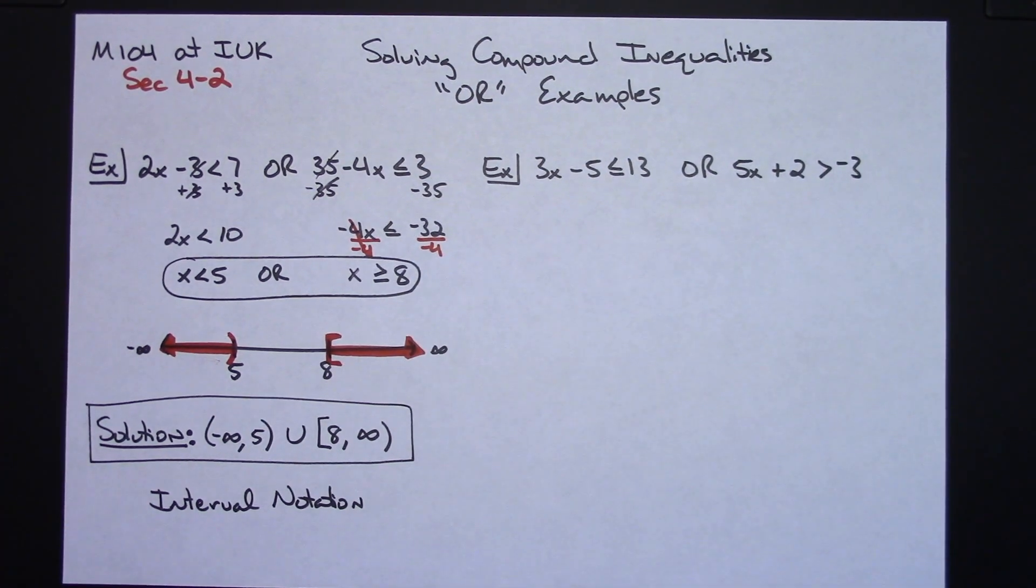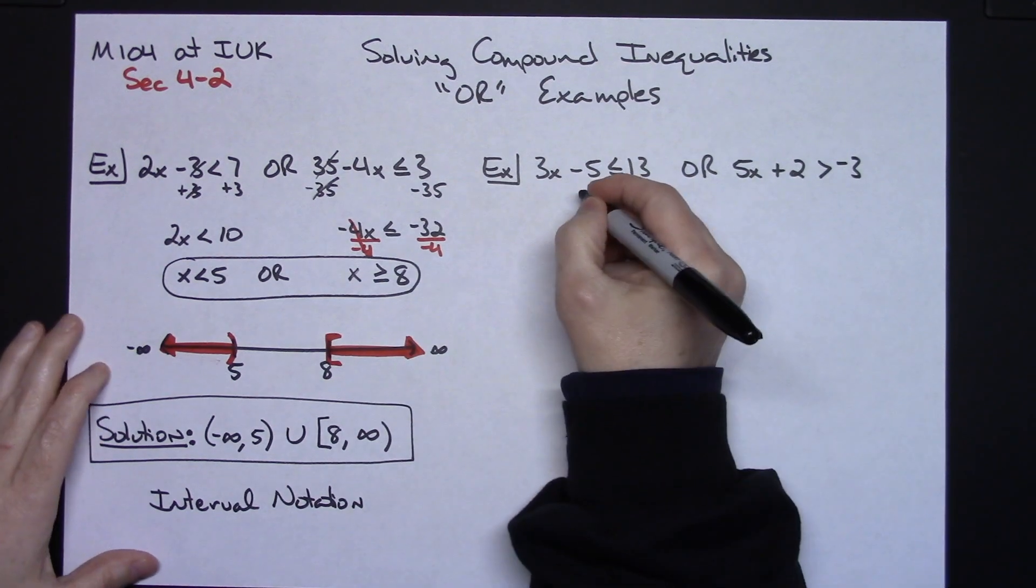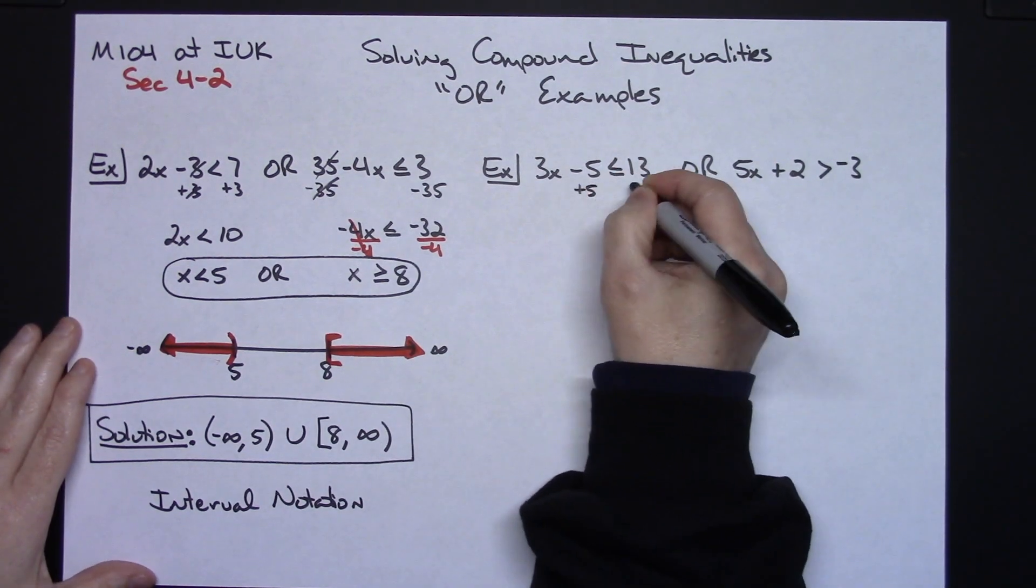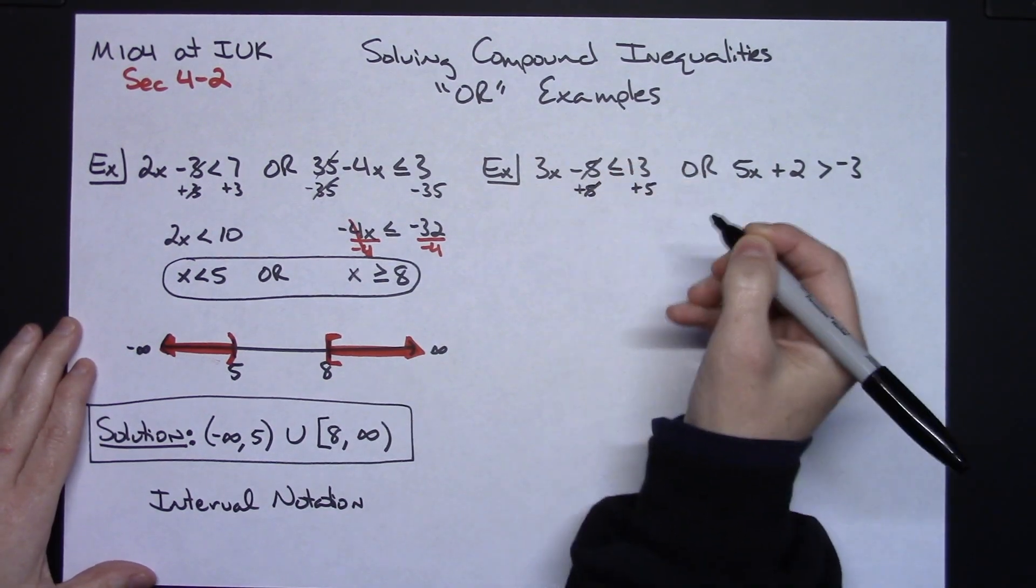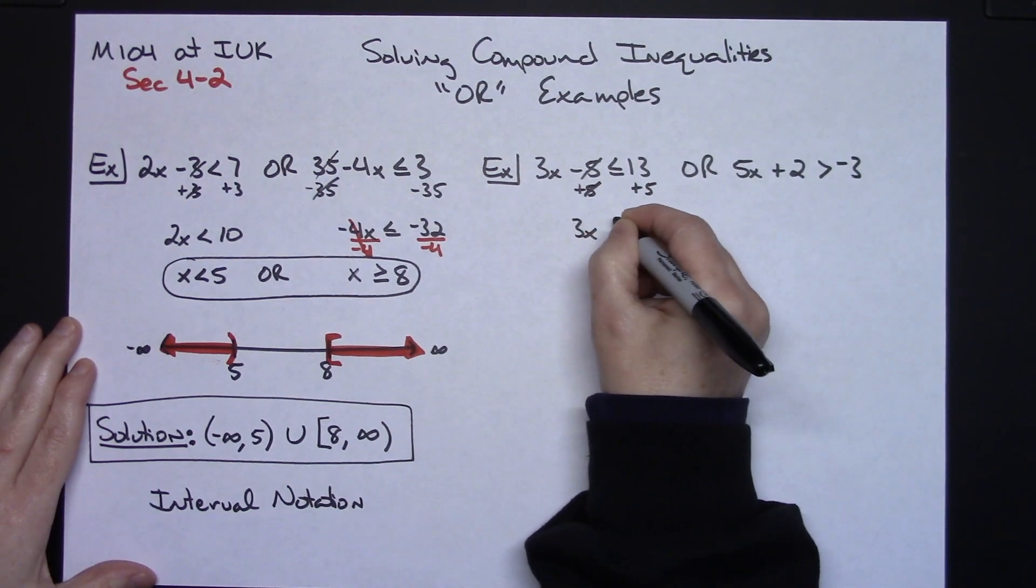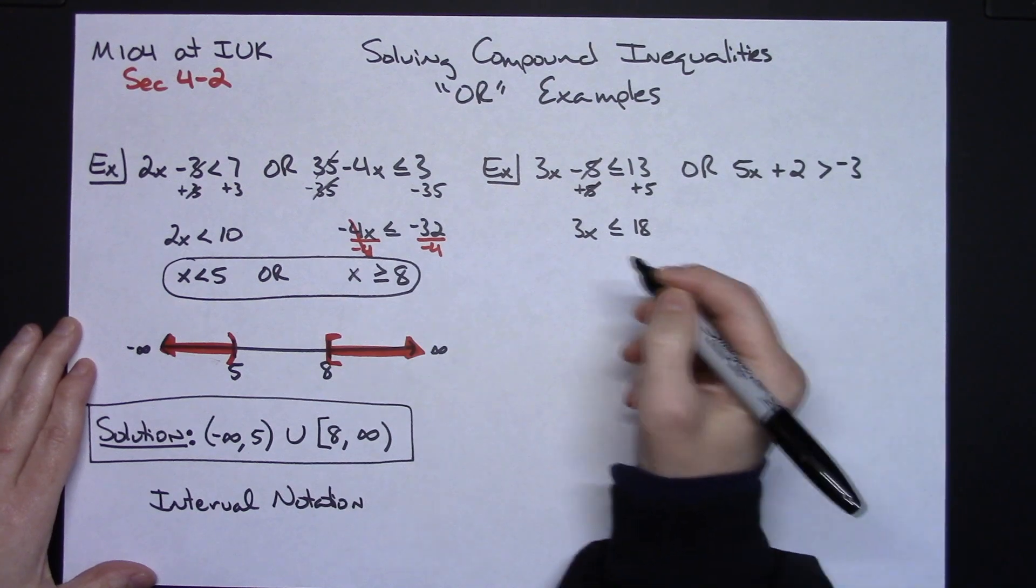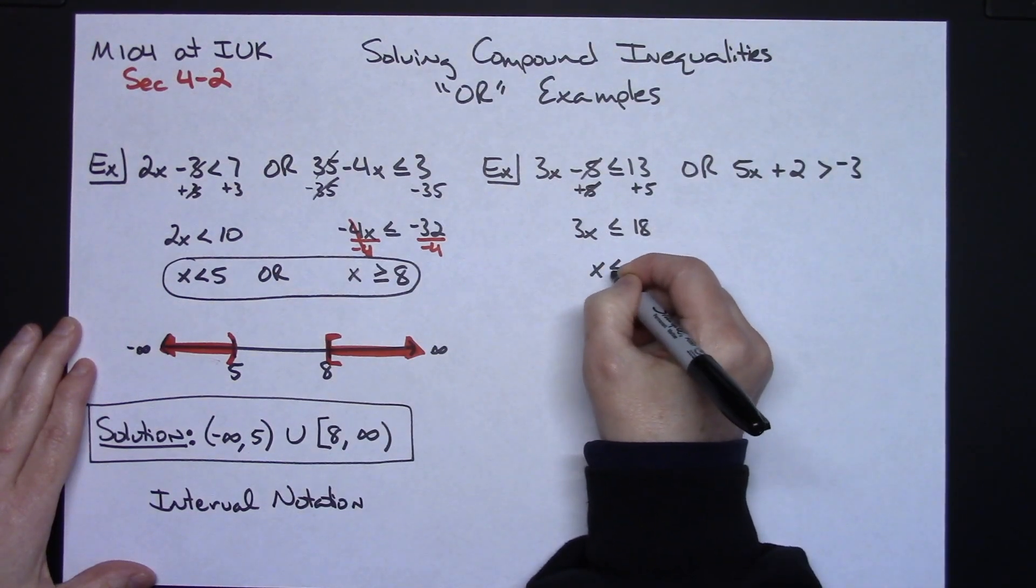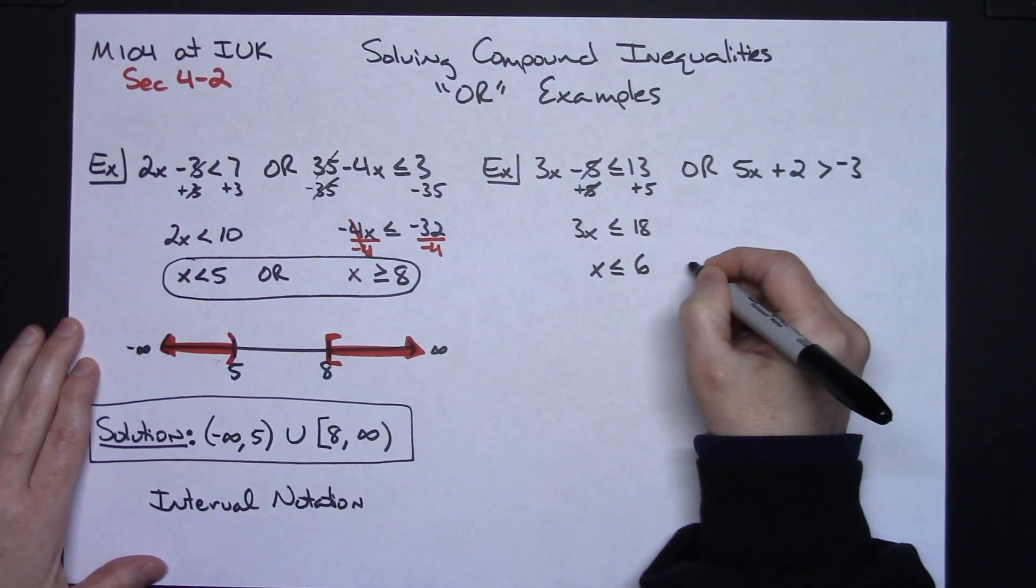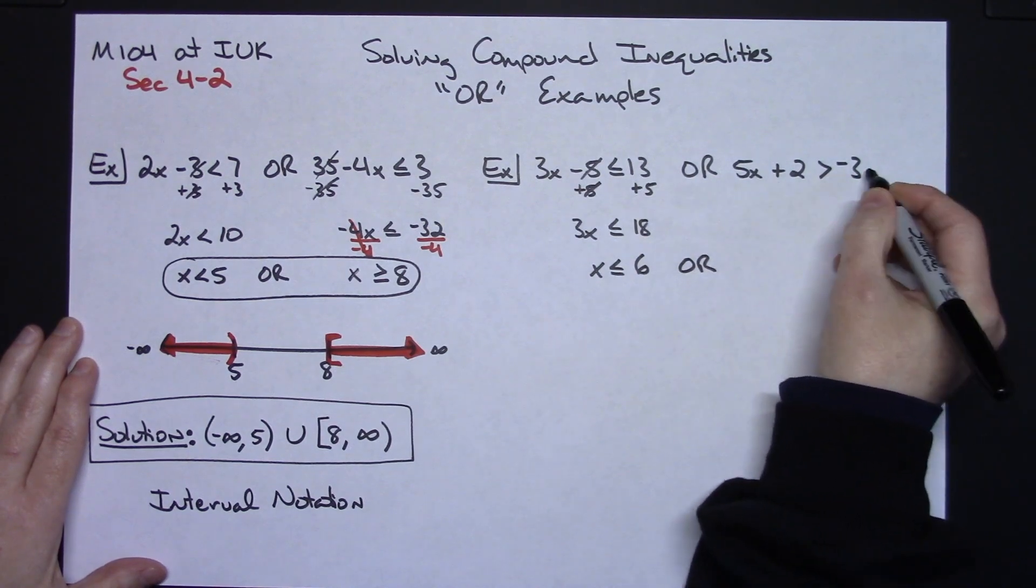Now let's just go ahead and do a second example here because while they look like they're going to be relatively similar, you don't know necessarily what you're going to encounter until after you solve it. So let's add 5 here to both sides of the equation to start solving this. I'm going to have 3x is less than or equal to 18. Going ahead and dividing by that 3, I'll have x is less than or equal to 6. I'm going to go ahead and put my OR in.